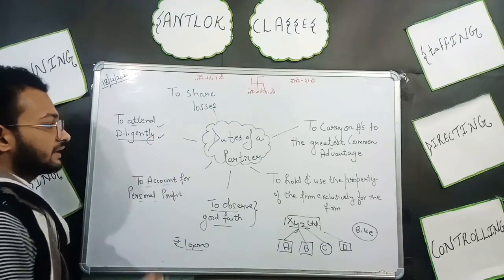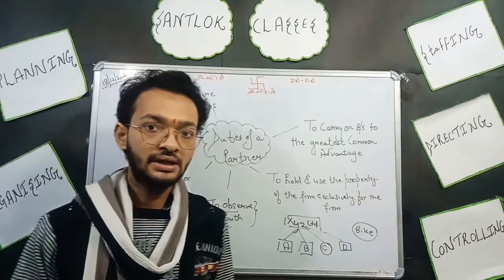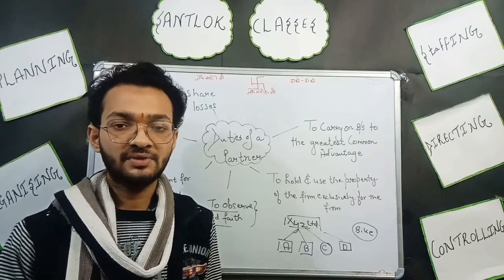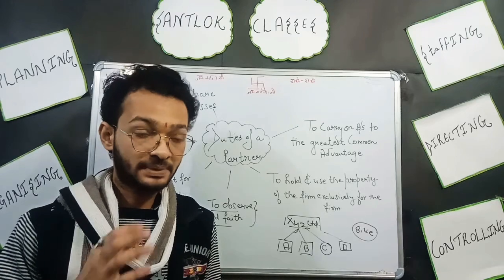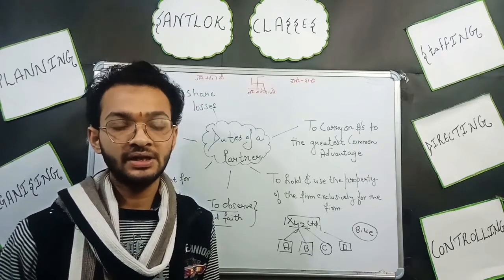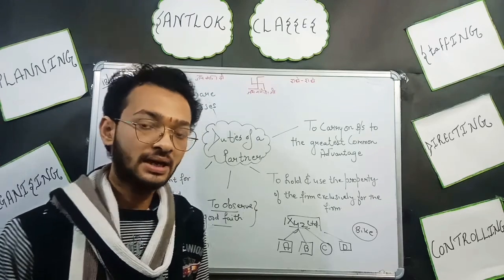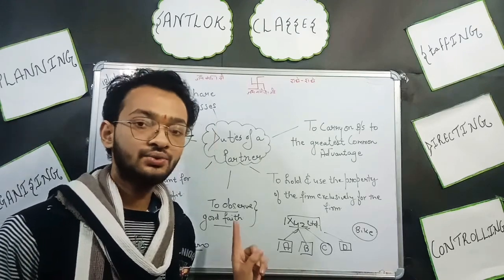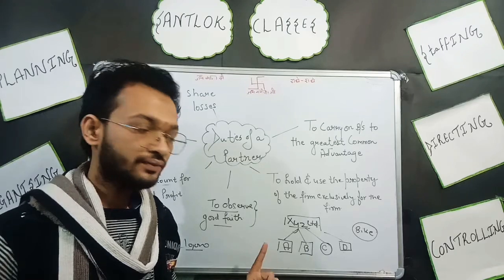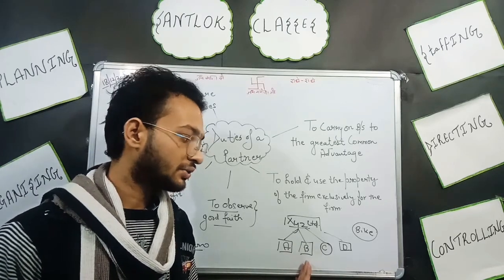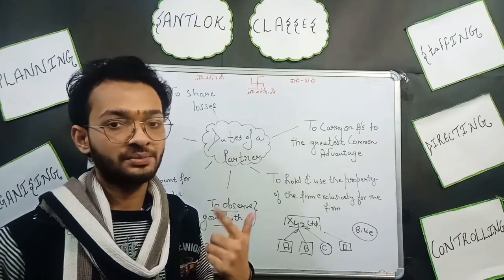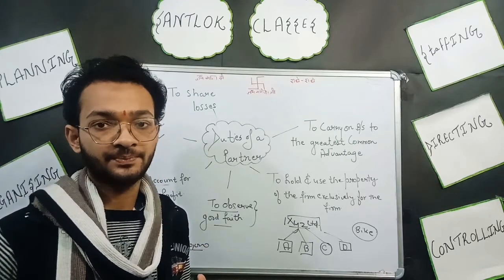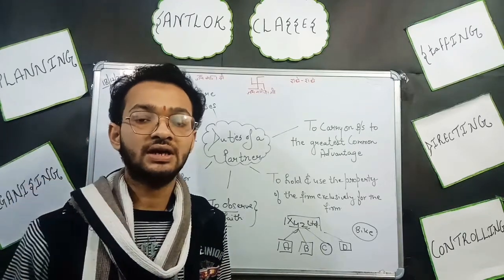Next is to attend diligently. It is every partner's duty that if they have knowledge or skills related to any content — if the firm has gotten into trouble or a problem — and they know how to resolve it, they must use that knowledge. For example, if Partner A made a mistake and Partner C knows how it can be corrected, it is C's duty to inform the firm, because if the same mistake continues it will cause a loss that all partners will bear. Every partner must use their knowledge and information to achieve the firm's goal, so that the firm's goodwill and reputation are not harmed.